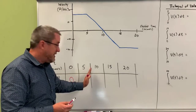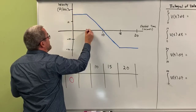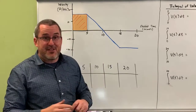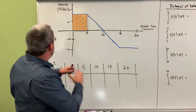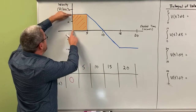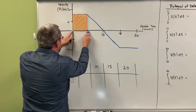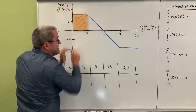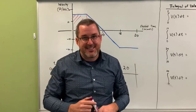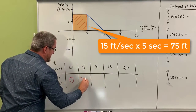Where is this train after it's been traveling for five seconds? The train has been traveling 15 feet per second for five seconds, so we're going to think about the area of this rectangle. If a train travels 15 feet per second for five seconds, this area is a visual geometric representation of the distance traveled. 15 feet per second is the height of the rectangle, five seconds is the base, so base times height — the area of this rectangle is 15 times 5, which is 75. In that first five seconds the train has traveled 75 feet.